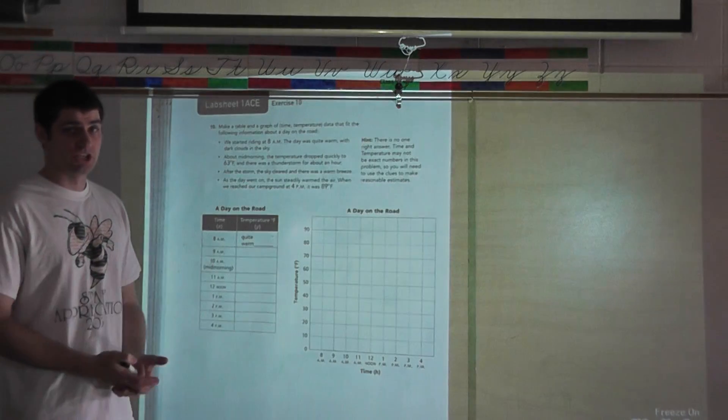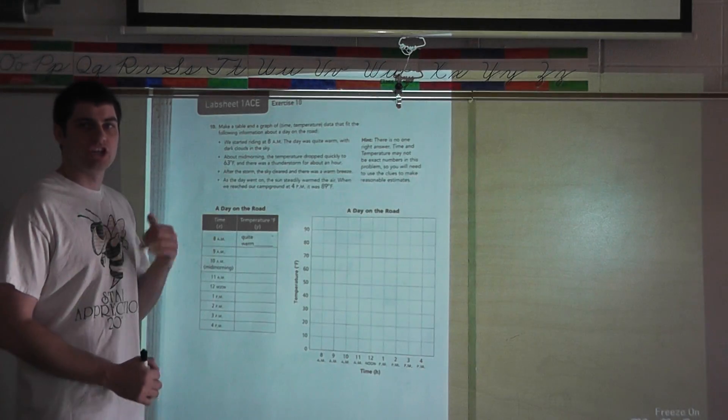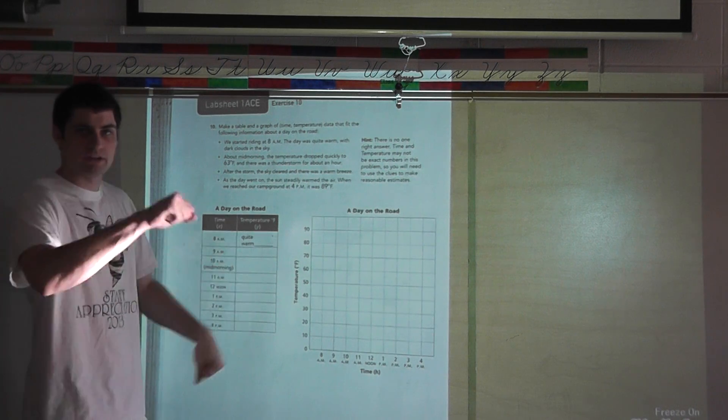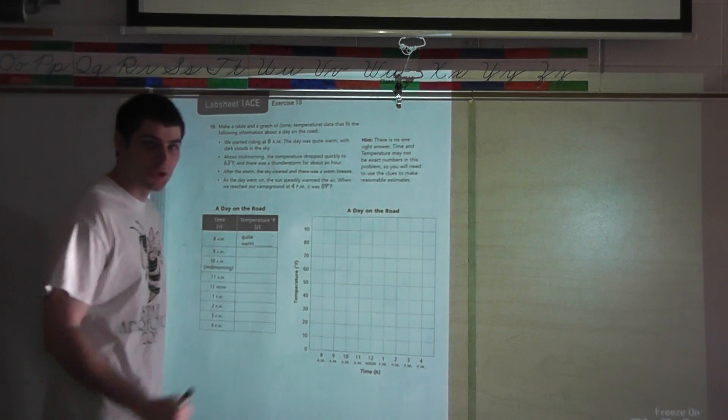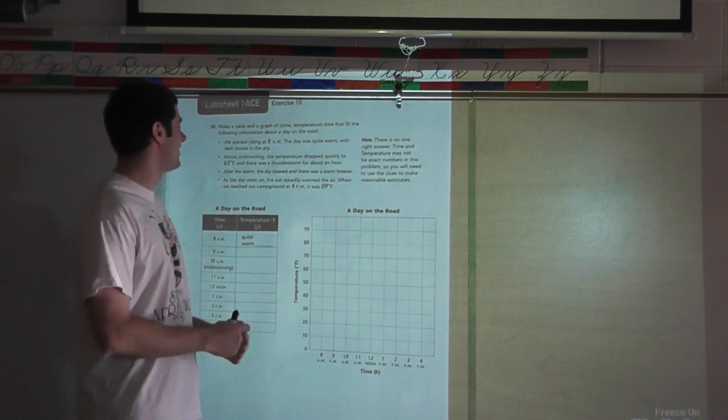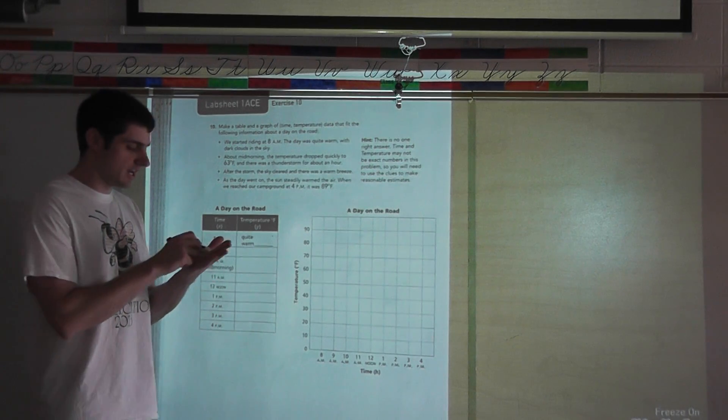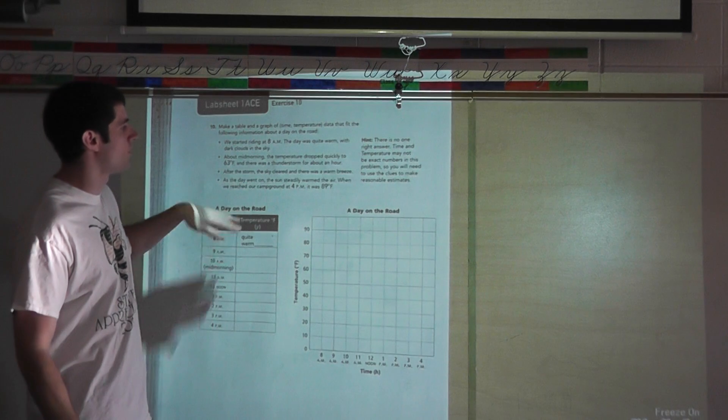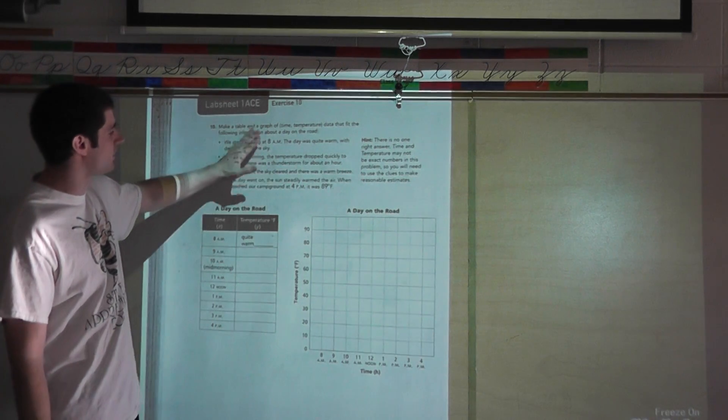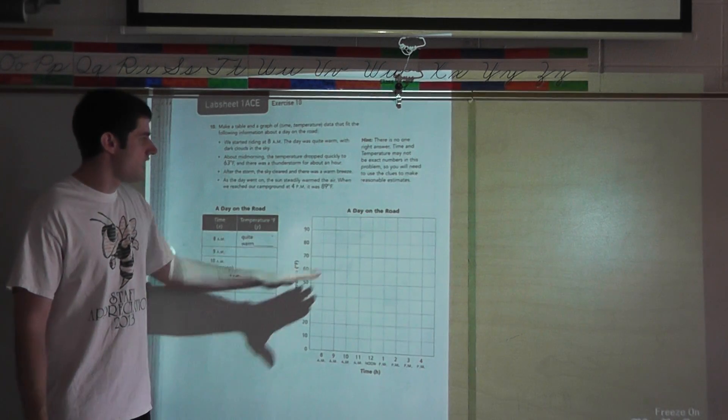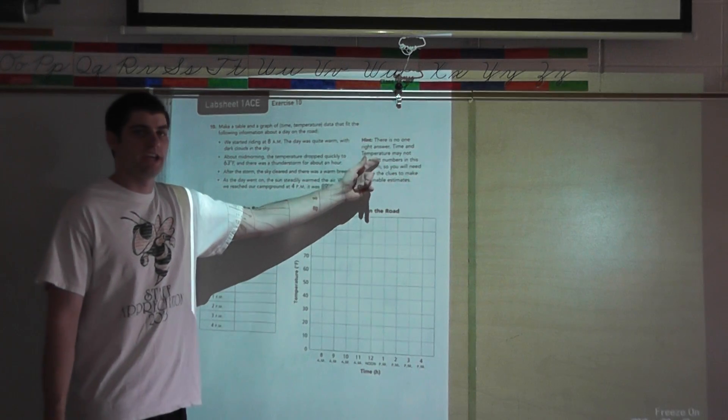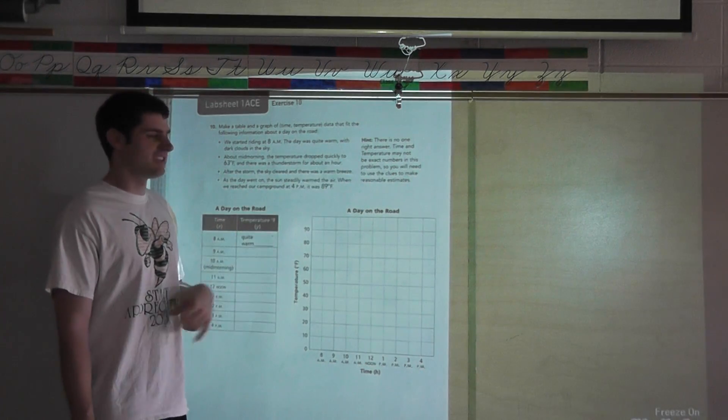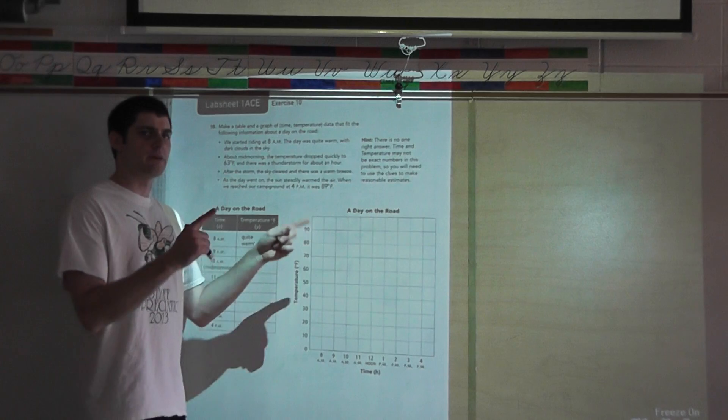After the storm, the sky cleared and there was a warm breeze. As the day went on, the sun steadily warmed the air. When we reached our campground at 4 p.m., it was 89 degrees Fahrenheit. So there's a lot of information in there, but it's data points. Let's take a look at the hint. I know a lot of times you want to skip that.